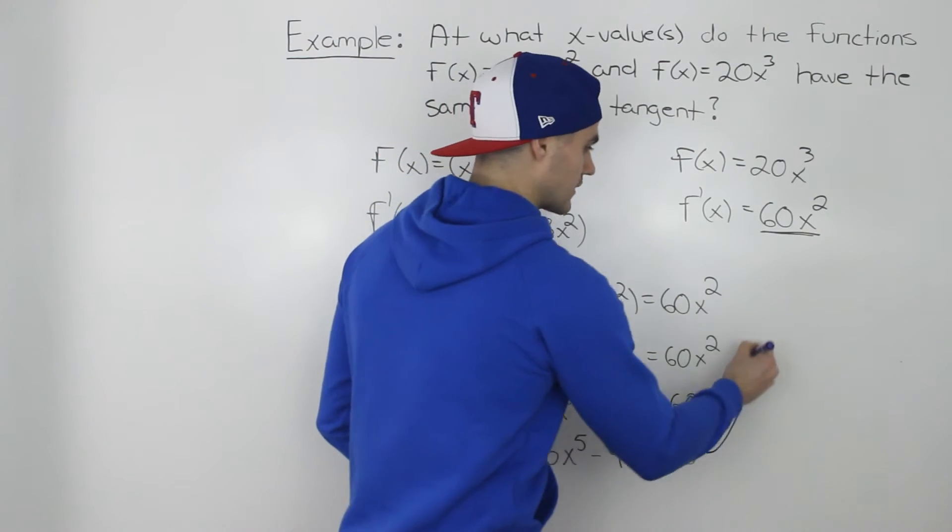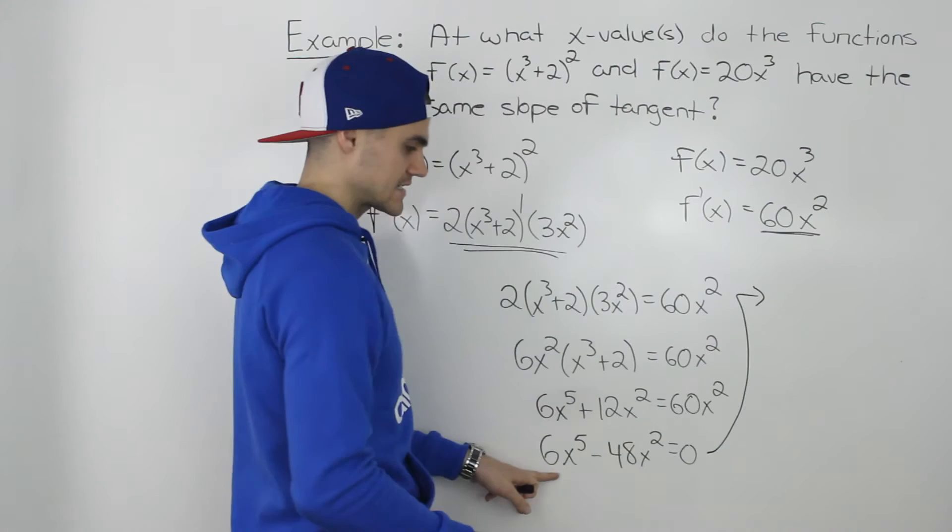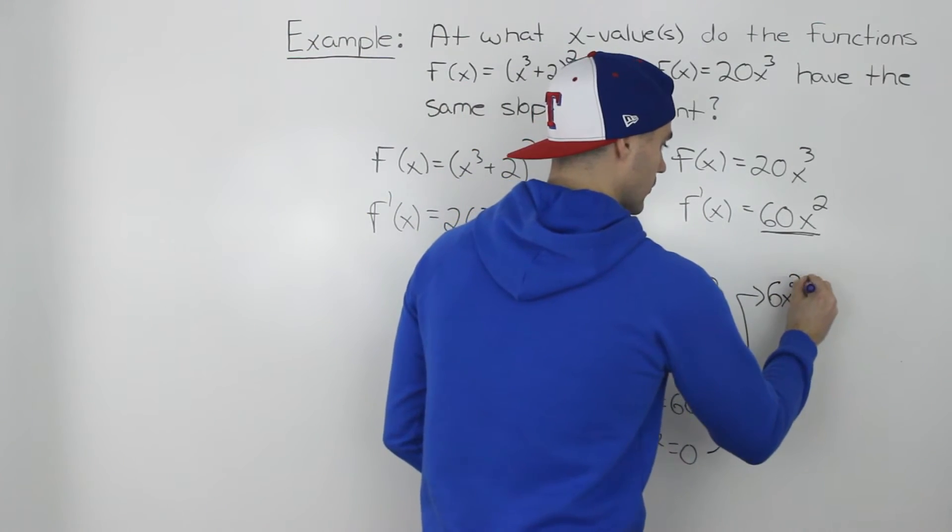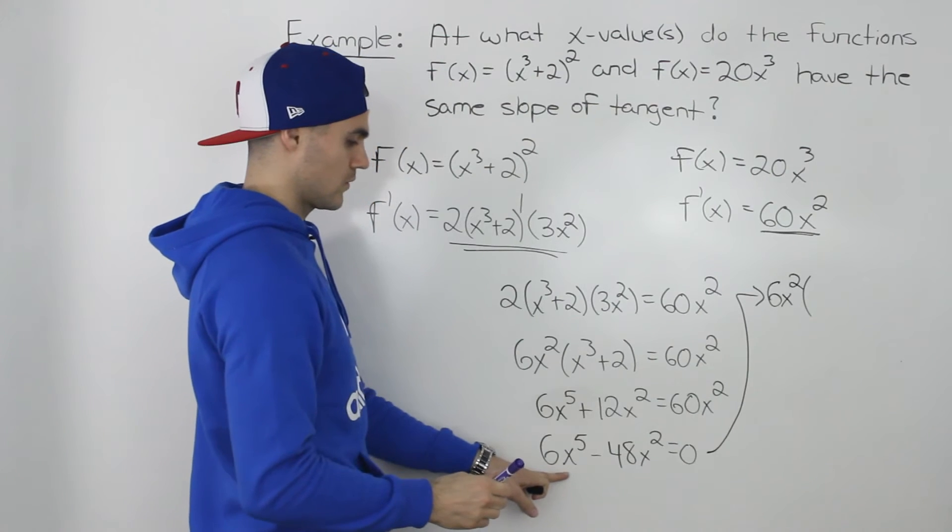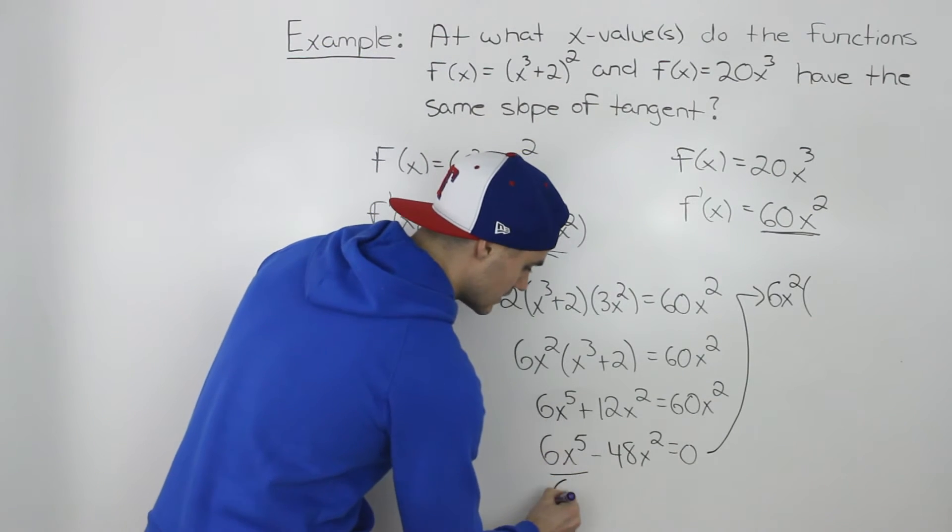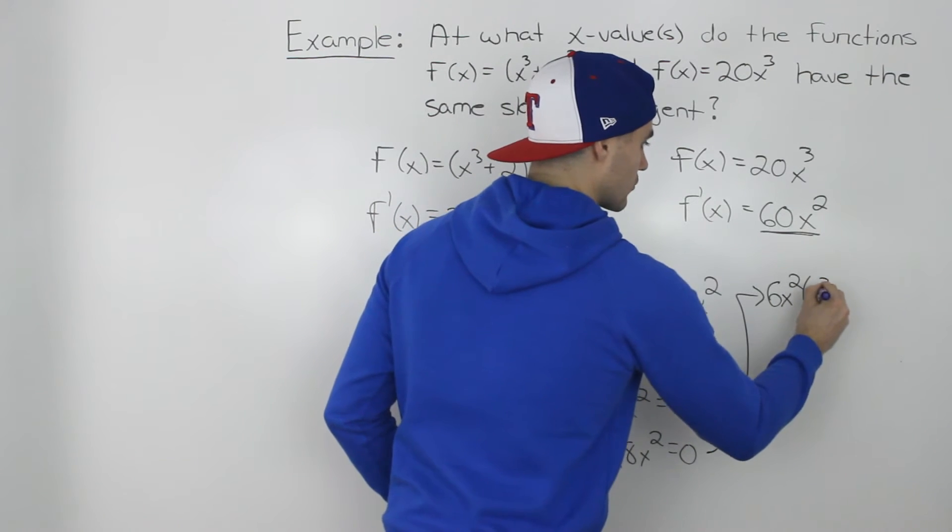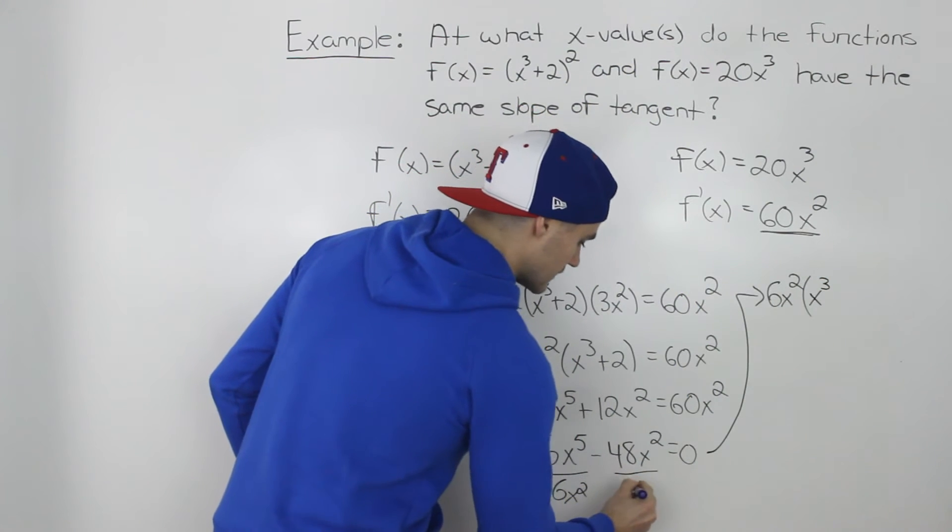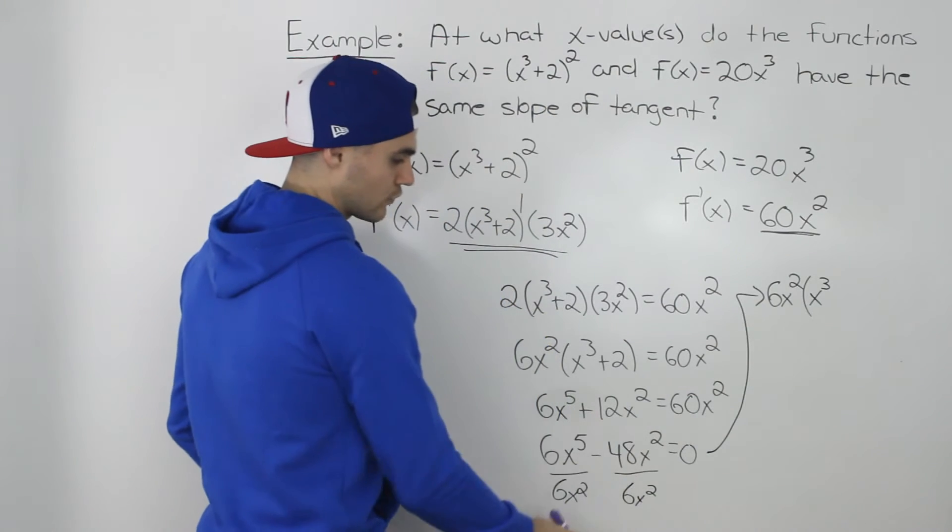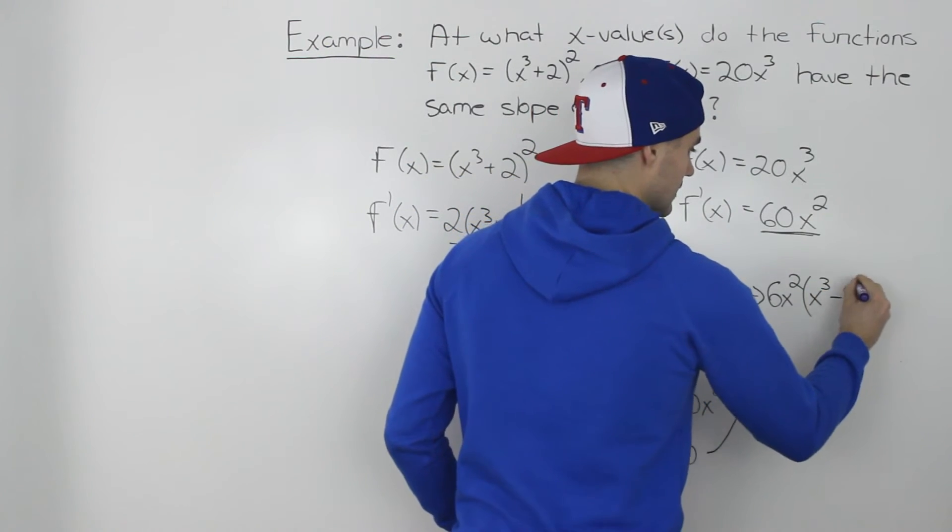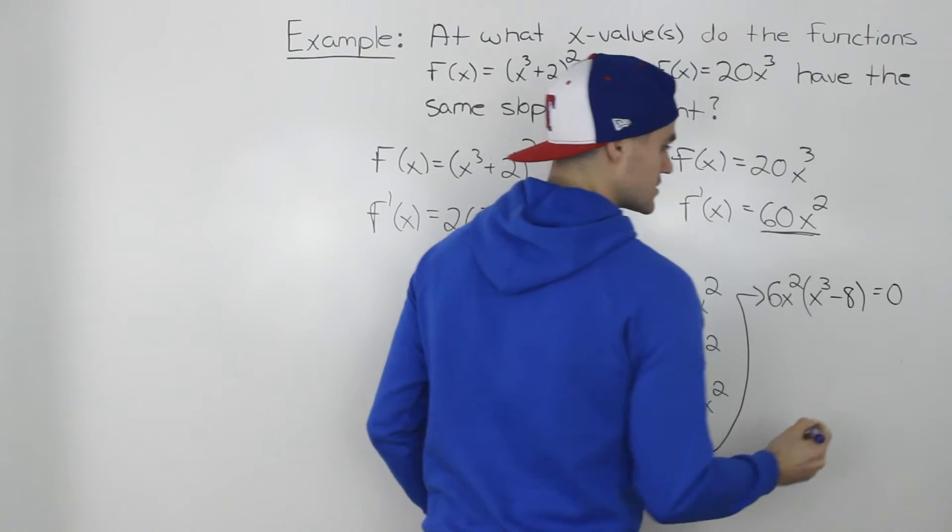And then from here, notice how we can factor out a 6x². So 6x² is common in both. When we divide this expression by 6x², we'd just be left with x³. And when we divide this expression by 6x², -48x² divided by 6x² would just give us -8.